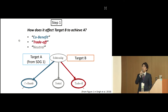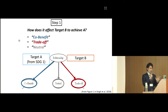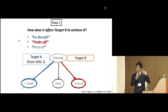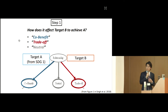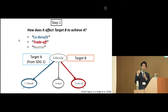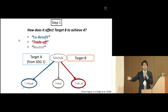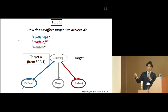The first step question is only this: How does achieving target A affect target B? It means that first we select one of the targets from SDG1, and if that target should be achieved, how much does it affect the probability of achieving target B? Co-benefit means if achieving target A will raise the probability of achieving target B. If achieving target A will reduce the probability of the other target, it is trade-off. If none of them, the relationship is neutral.